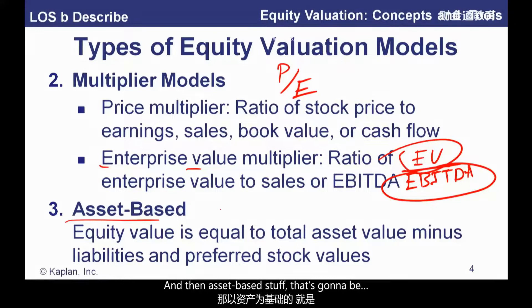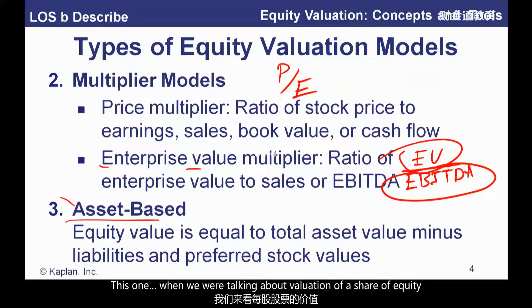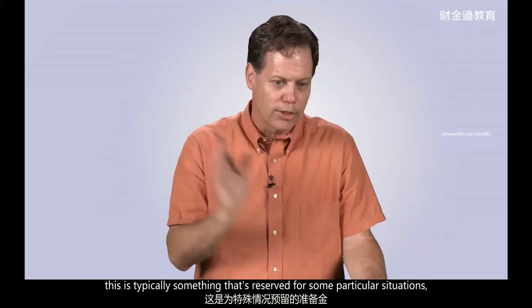Asset-based valuation involves looking at the assets, subtracting off the value of the liabilities and preferred stock, which gives us the value of the equity position. When we're talking about valuation of a share of equity, this is typically reserved for some particular situations — in particular, bad situations like firm liquidation.